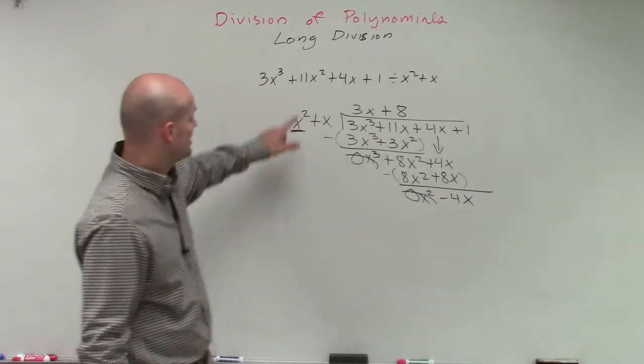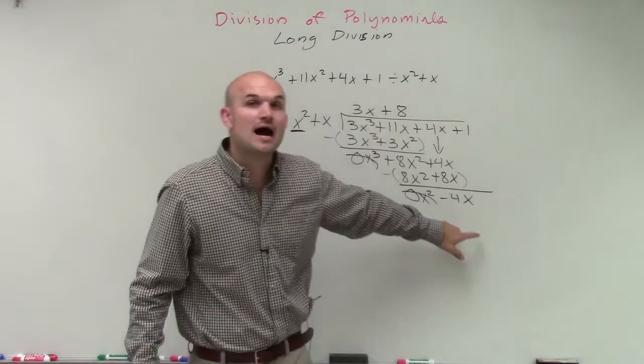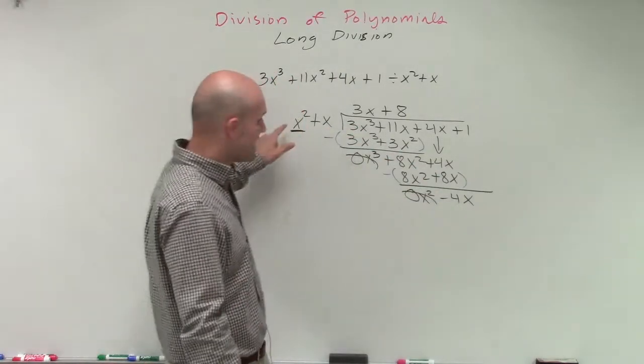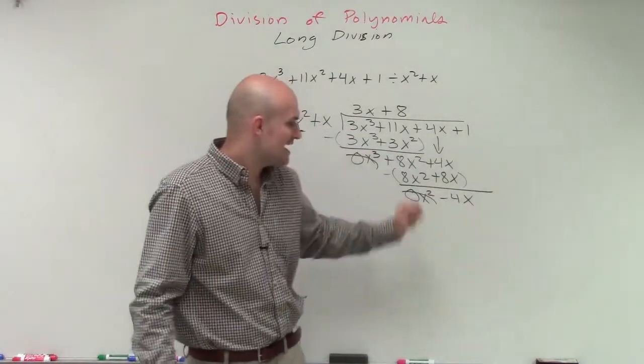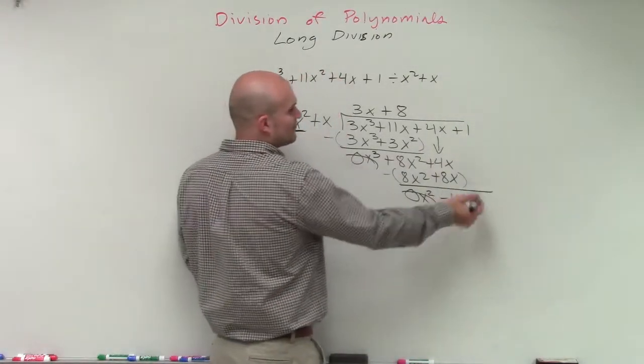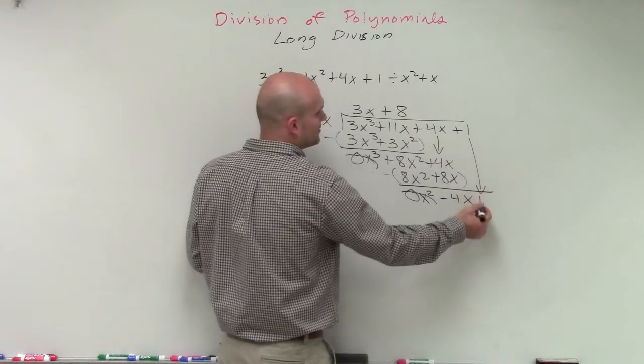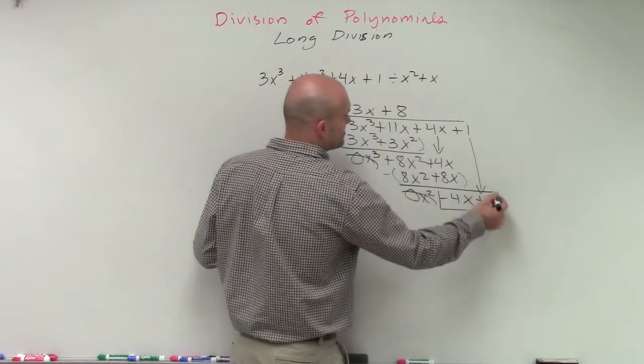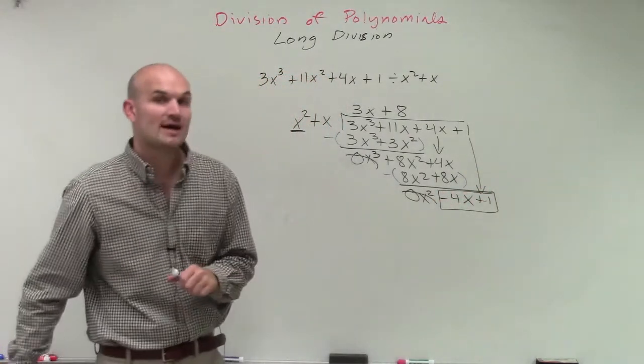Now we have a difficulty because our divisor has a larger power than our dividend. So therefore, x squared is not going to divide into a negative 4x. So we take down, so since we cannot divide any further, we're just going to bring down our final constant, and that is going to be our divisor, negative 4x plus 1.